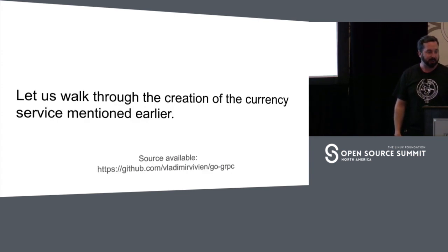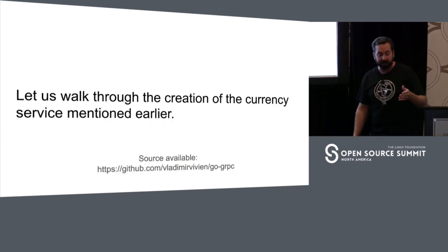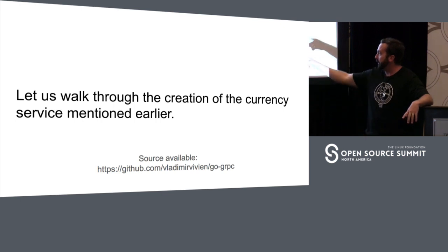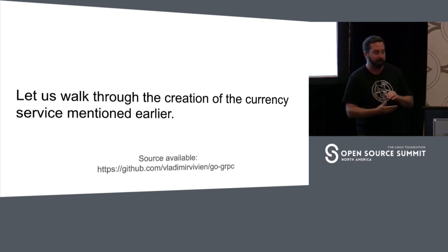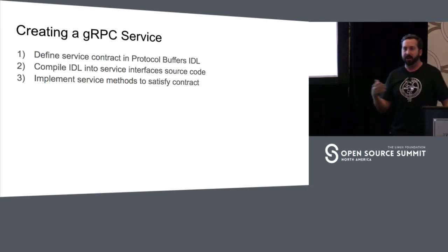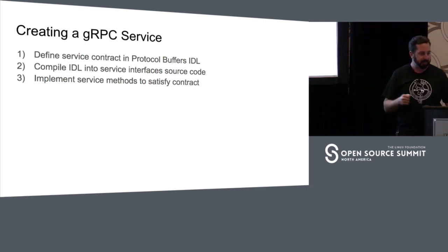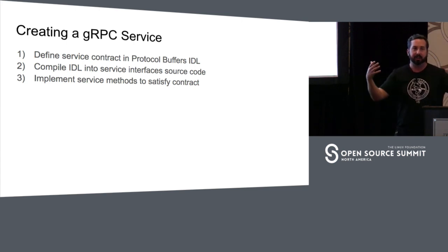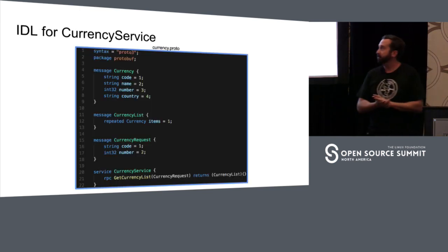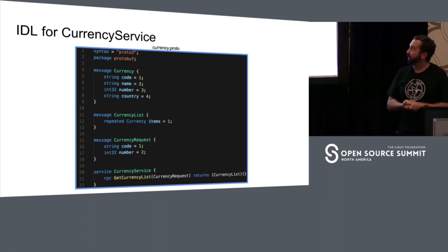Let's get practical with a gRPC service in Go. Vlad put together some great examples at a GitHub repo — that URL will be available after the conference through video and as a PowerPoint. What we're going to do is define the service contract — the IDL — compile it into service interfaces and source code, and then implement the methods that were defined to create a real working service. Let's look at the IDL: here we have a protobuf file.